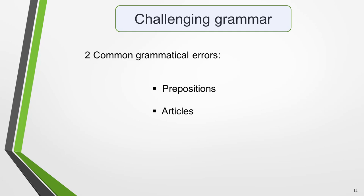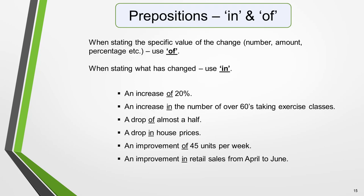For many students, two aspects of grammar that are a particular problem are prepositions and articles. There are two specific prepositions you'll probably use numerous times in your Task 1 essay when writing about change: 'in' and 'of', and they're easy to get wrong. Follow this general rule: when stating the specific value of the change — a number, amount, percentage, etc. — use 'of'. When stating what has changed, use 'in'. For example: 'an increase of 20%', 'an increase in the number of over 60s taking exercise classes', 'a drop of almost a half', 'a drop in house prices', 'an improvement of 45 units per week', 'an improvement in retail sales from April to June.'